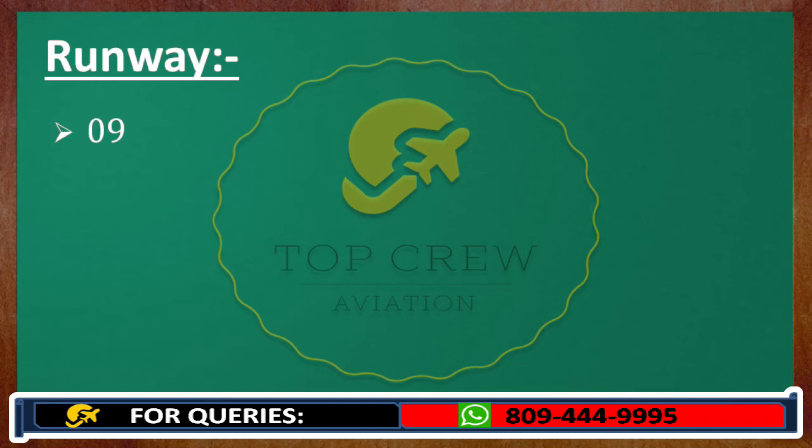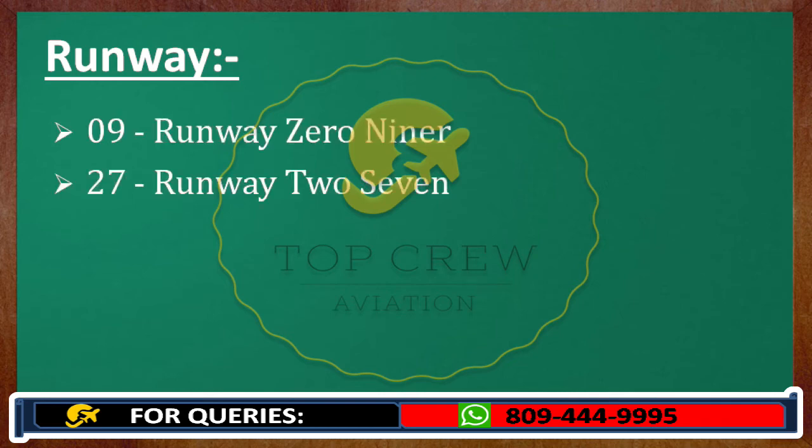Now runway designations. Runway 090 — we would transmit it as runway 090. Runway 27 — we would transmit it as runway 27.